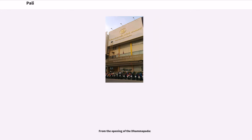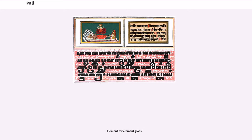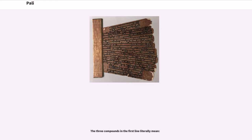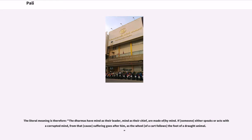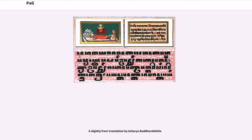From the opening of the Dhammapada, the three compounds in the first line literally mean: 'The dharmas have mind as their leader, mind as their chief, are made of/by mind. If someone either speaks or acts with a corrupted mind, from that cause suffering goes after him, as the wheel of a cart follows the foot of a draft animal.' A slightly freer translation is given by Acharya Buddharakkhita.